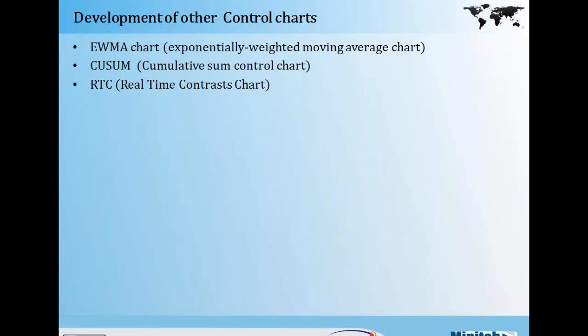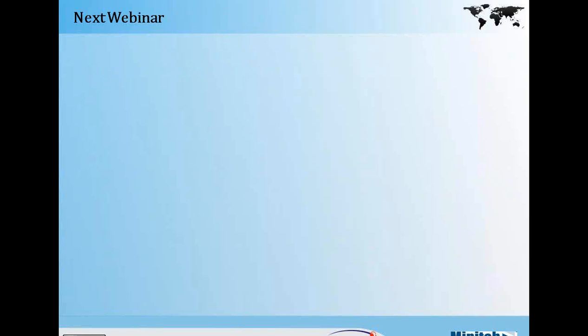Summarizing: control charts, if used effectively, will give us very good control and a very good overview of how your critical processes are performing and whether they are able to meet the specifications set by customers. We can use control charts to monitor inputs to processes as well as the outputs of critical processes, thereby being in a position to deliver more predictable outputs to our customers. That's it from me — we can now take questions.